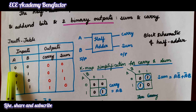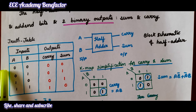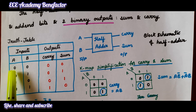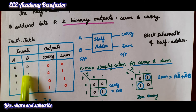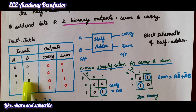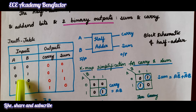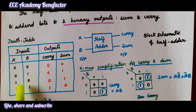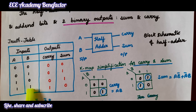In every truth table for two inputs, we write the four combinations as: 0 in binary is 0,0; 1 is 0,1; 2 is 1,0; 3 is 1,1. So we take the order as: 0,0 then 0,1 then 1,0 then 1,1.